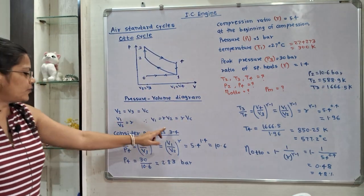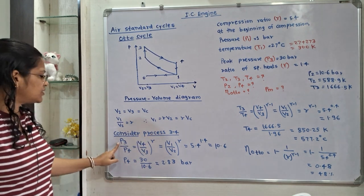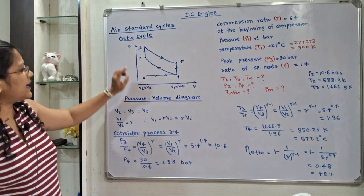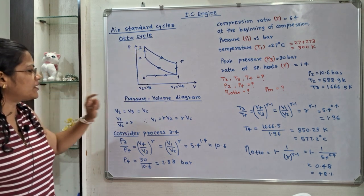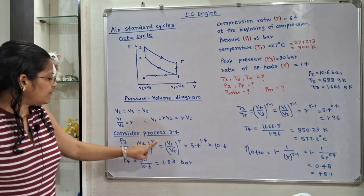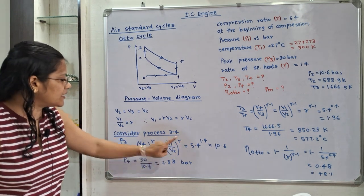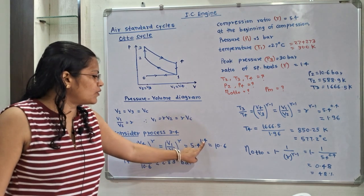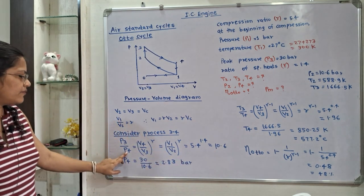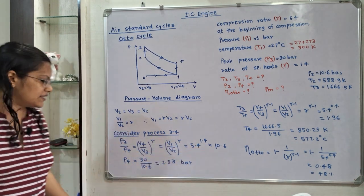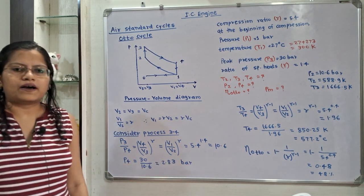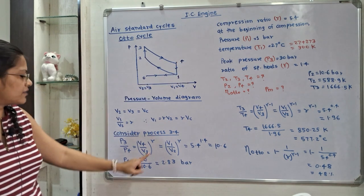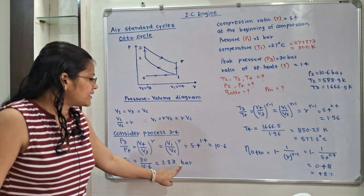For process 3 to 4 (isentropic expansion), the relation is P3/P4 = (V4/V3)^γ. Since V4 = V1 and V3 = V2, this becomes (V1/V2)^γ = R^γ = 5.4^1.4 = 10.6. Therefore P4 = P3/10.6 = 30/10.6 = 2.83 bar.